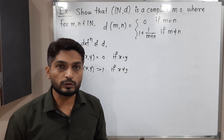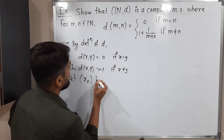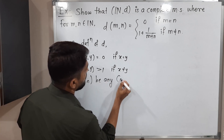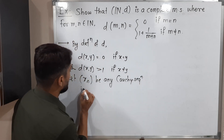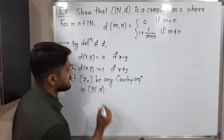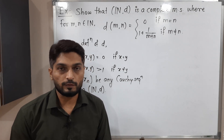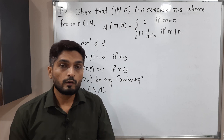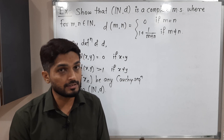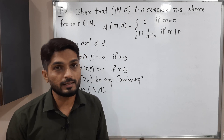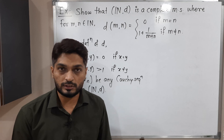We have to prove it is complete. Let X_n be any Cauchy sequence in (N, D). We have to prove that it is convergent. We start with the definition of Cauchy sequence: for given ε > 0, there exists a fixed natural number N such that D(X_n, X_m) < ε for all n, m ≥ N.